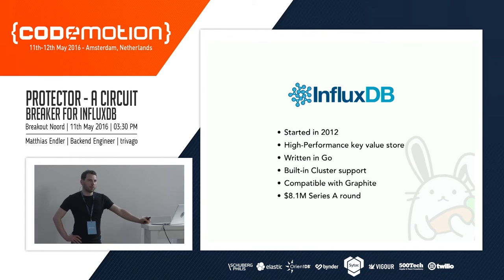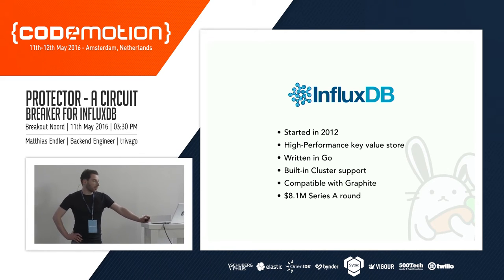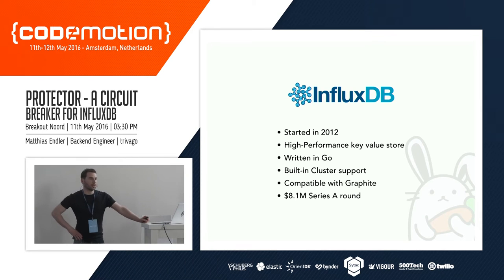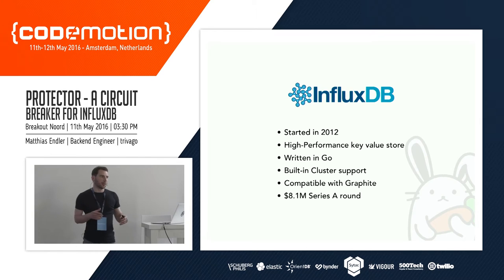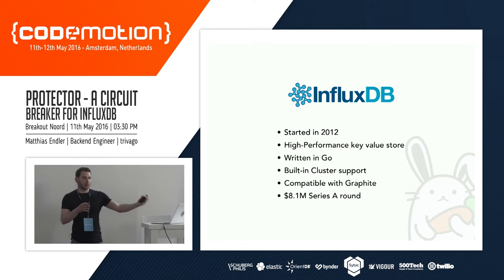InfluxDB is just a key-value store with a query language on top where you can query the data. It's written in Go and has built-in cluster support, which means you can scale it up to many machines. It's compatible with Graphite, as I said. They also get funding, so it's not just an open source project that could go out of scope — they are building an ecosystem around InfluxDB including a dashboard solution and alerting. But the core part is open source, and that's the only thing we use.